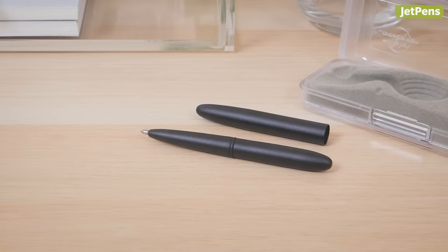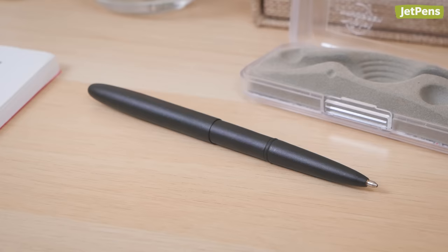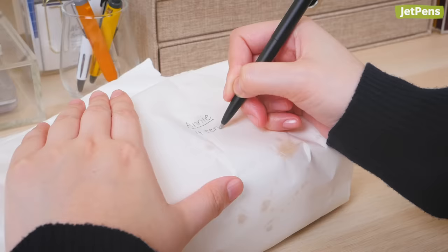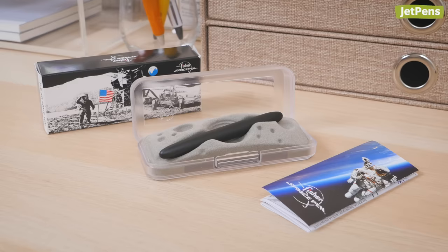We can't talk about pressurized ink without mentioning the Fisher Space Pen. Boasting an all-brass body, this nearly indestructible pen writes dependably over grease and, of course, in space. It actually accompanied the Apollo 7 astronauts into space in 1968.